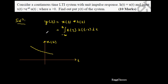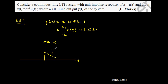u(t) is the unit step signal which exists from 0 to infinity and does not exist for negative time. So e^(-at)u(t) starts from position 0 and is a decaying exponential — it is zero from minus infinity to 0. This is the nature of x(t).